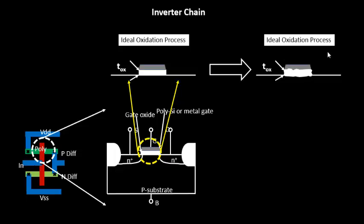In a real oxidation process, the oxide thickness is not constant along the gate length. I've shown the worst case here — it could be better than that — but the oxide thickness is not constant whereas it is expected to be constant across the complete channel length.